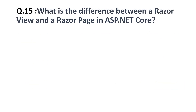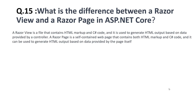The fifteenth question is: what is the difference between a Razor View and a Razor Page in ASP.NET Core? A Razor View is a file that contains HTML markup and C# code, and it is used to generate HTML output based on data provided by the controller. A Razor Page is a self-contained web page that contains both HTML markup and C# code, and it generates HTML output based on data provided by the page itself.